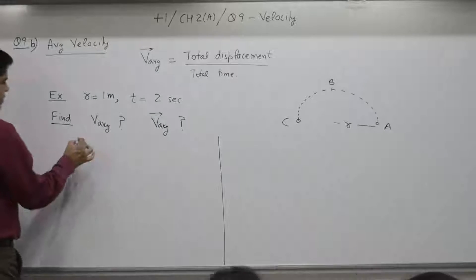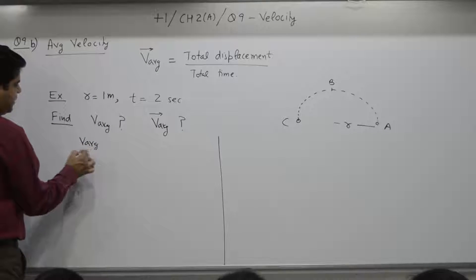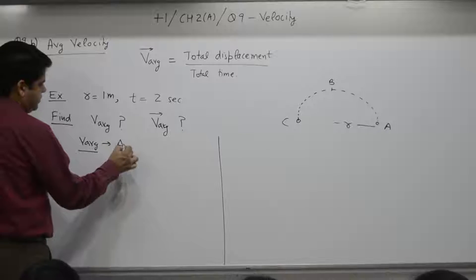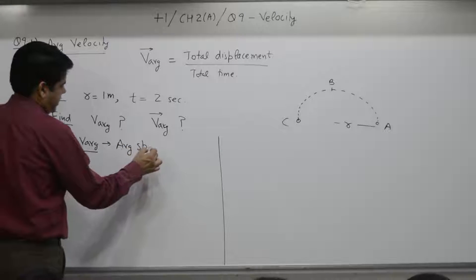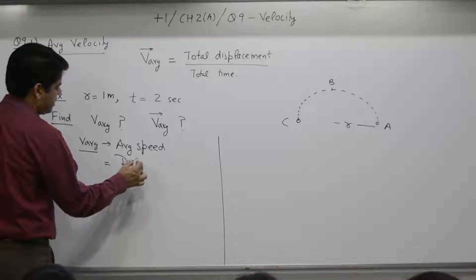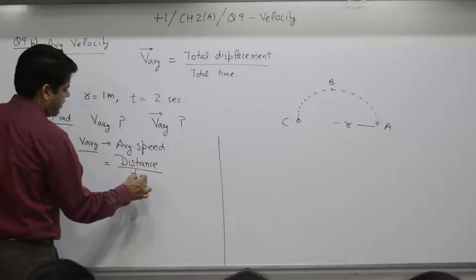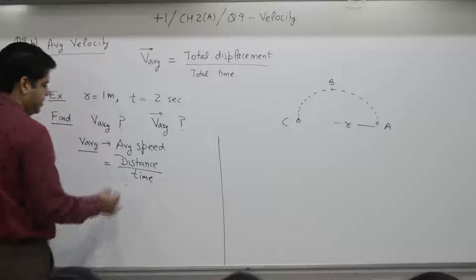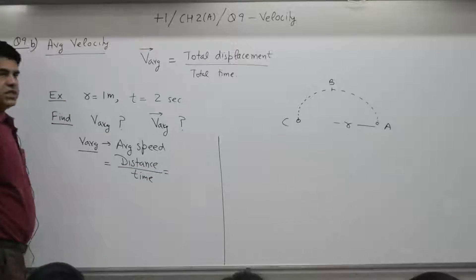First part, average speed. As per definition, average speed is equal to what? Distance covered by time taken. In the previous lecture, distance covered is how much?